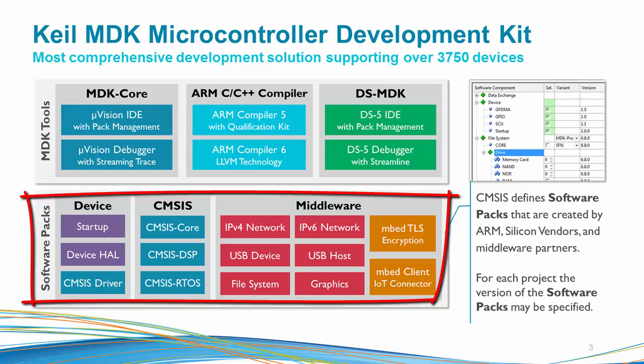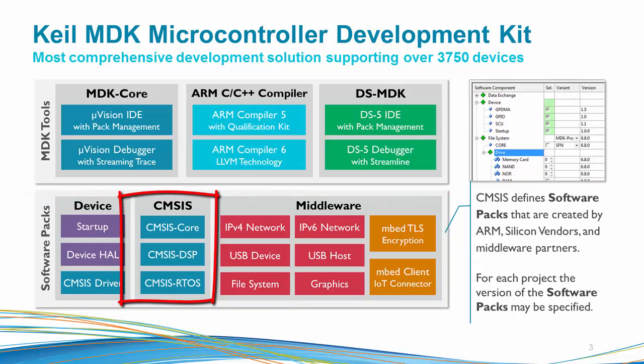Software packs add device support and software components that you can use as building blocks for your application. These software components are provided by ARM, silicon vendors, and middleware companies. CMSIS, the Cortex Microcontroller Software Interface Standard, is provided as a software pack itself. It is a vendor-independent collection of API definitions, libraries, utilities, and methods that simplify and accelerate the creation of microcontroller applications. CMSIS is provided free of charge by ARM, and its software components can be used in any open source and commercial projects. Software programmers benefit from RTOS, DSP libraries, consistent access to core peripherals, and enhanced debug visibility.